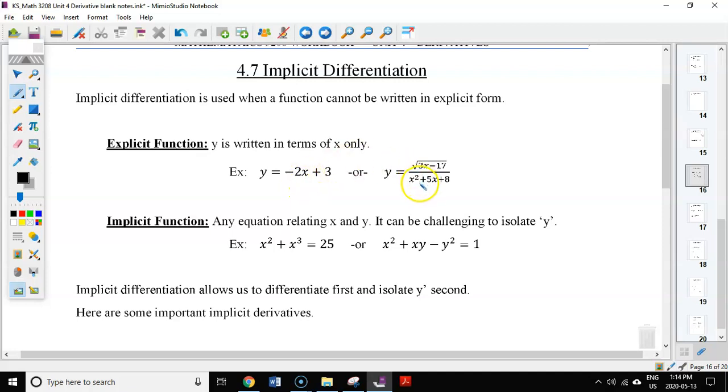Over here, we've got a rational function, y equals square root of 3x minus 17 over x squared plus 5x plus 8. The values inside the variables doesn't really matter. Essentially an explicit function has y equals, and then whatever operations are being done to x are on the right side.